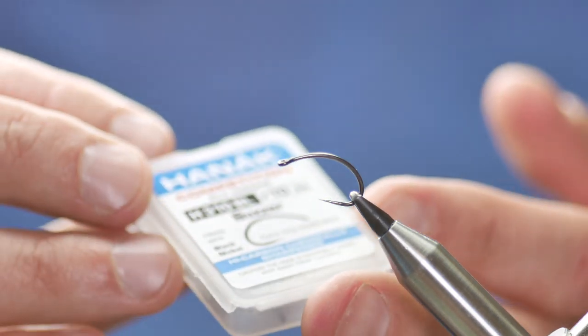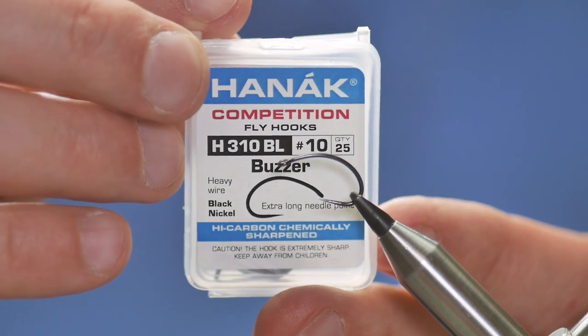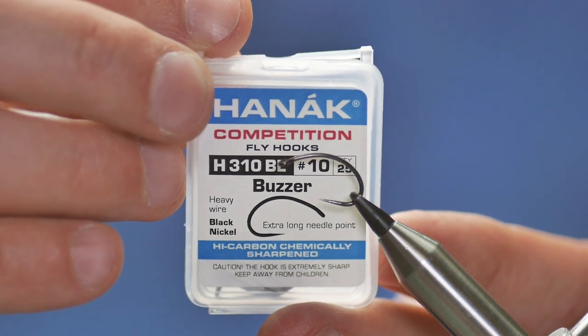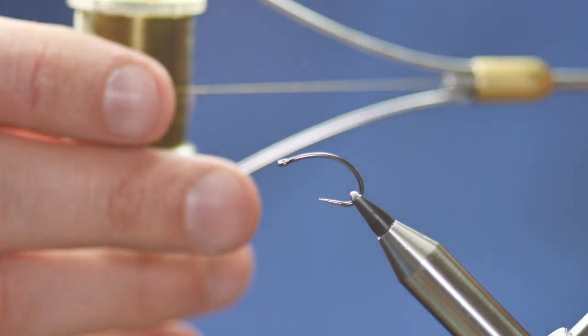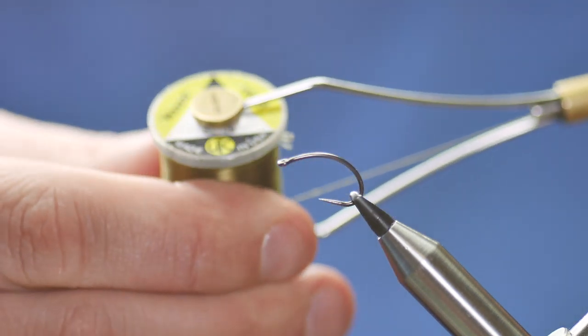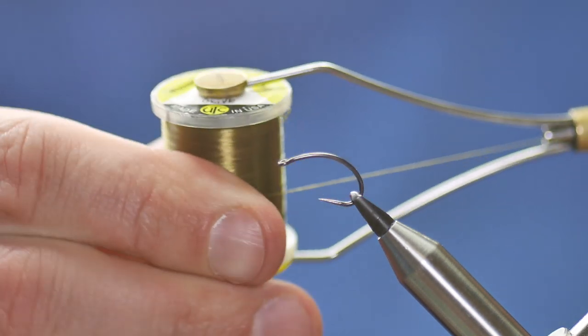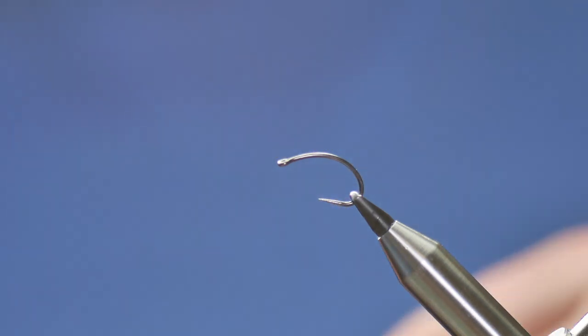In the vise is a Hanak 310 barbless hook, size 10, heavy wired. The thread I'm using today is UTC wax thread, 140 denier, olive.